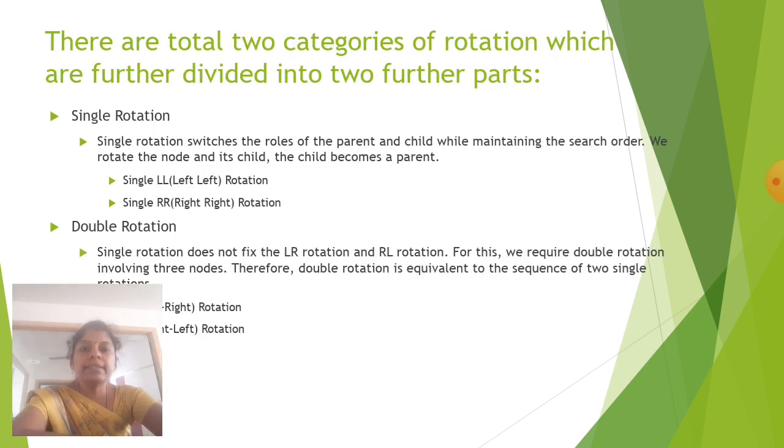There are total two categories of rotation which are further divided into further parts: single rotation and double rotation. Single rotation switches the roles of the parent and child while maintaining the search order. We rotate the node and its child, the child becomes a parent. Single left-left rotation, single right-right rotation.